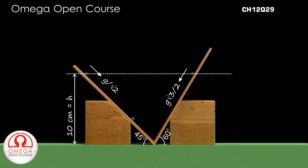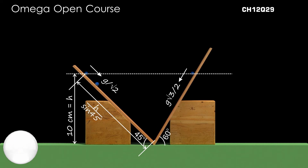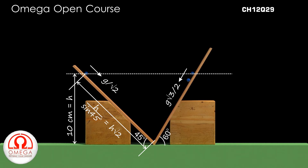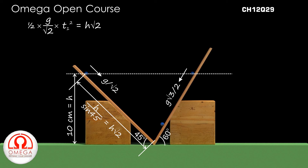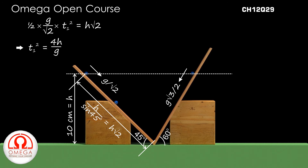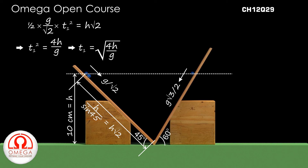From trigonometry, the length of the incline travelled by the particle on the left is h/sin 45° or h√2. If t1 is the time the particle takes to travel from the highest point to the bottom, then (1/2)(g/√2)(t1²) = h√2. This implies t1² = 4h/g, or t1 = √(4h/g). Putting h = 0.1 m and g = 10 m/s², we get t1 = 0.2 seconds.